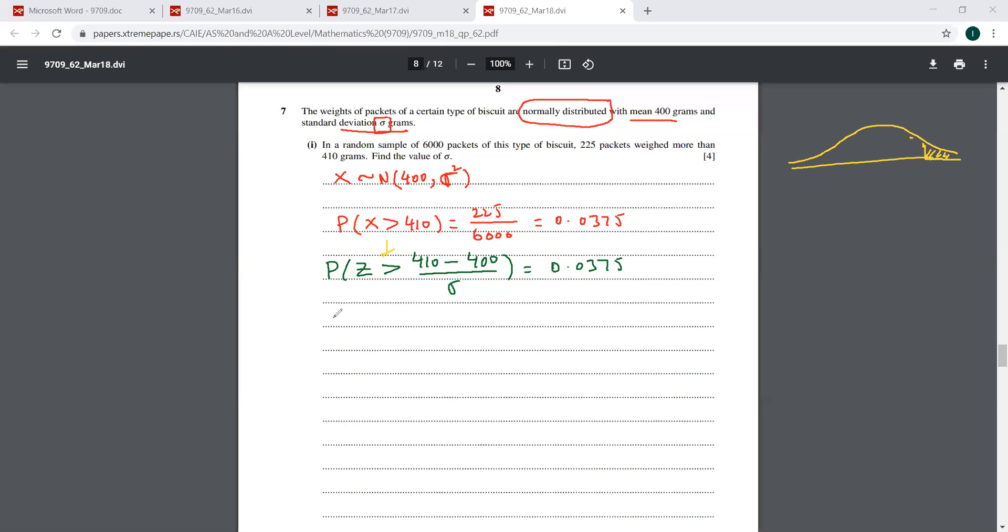So I would write this as rather 1 minus phi of 10 over sigma, that equals 0.0375. So phi of 10 over sigma is 1 minus this, which is 0.9625.